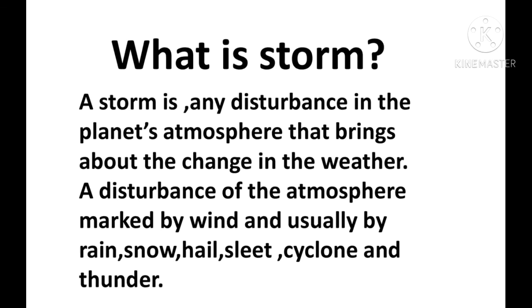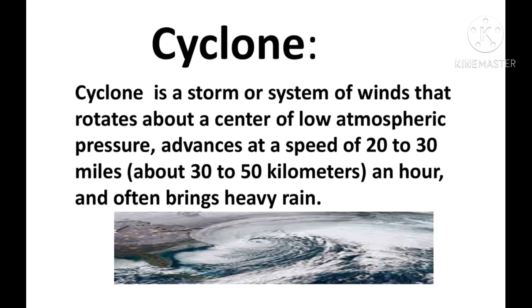A storm is any disturbance in the planet's atmosphere that brings about a change in the weather — a disturbance of the atmosphere marked by wind and usually by rain, snow, hail, sleet, cyclone, and thunder.